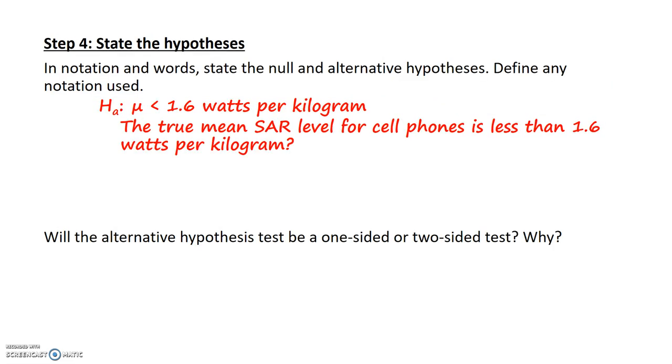In step four, I need to write down the null and alternative hypotheses. I find it easier to write down the alternative first because our question of interest is usually in the form of a statement that corresponds to our alternative hypothesis. The notation for the alternative hypothesis is H_A, and I state that the mean, μ, is less than 1.6 watts per kilogram. In words, this is what the researcher believes: the true mean SAR level for cell phones is less than 1.6 watts per kilogram.